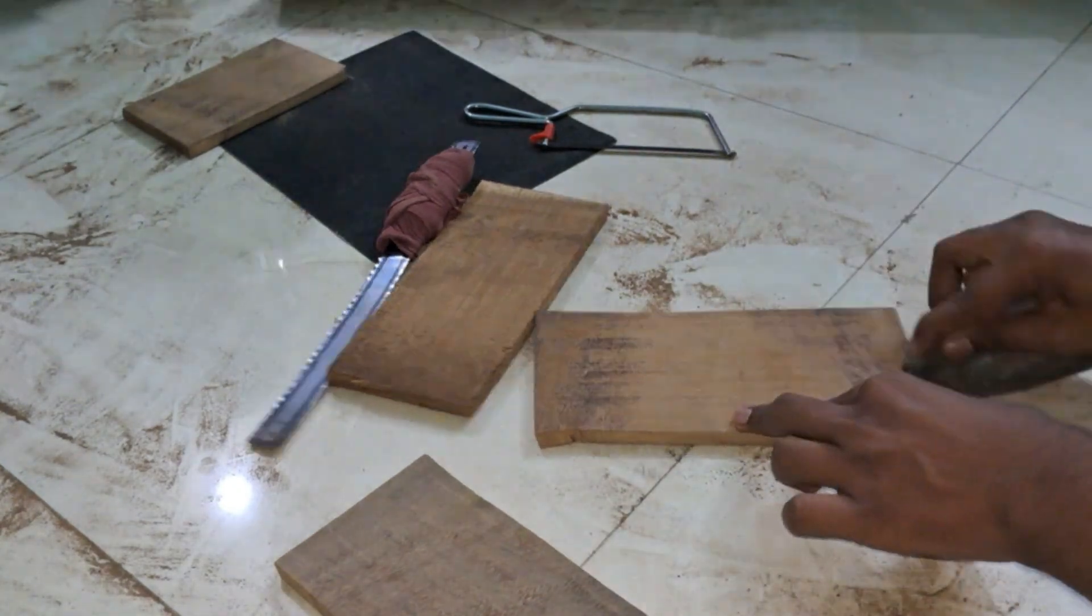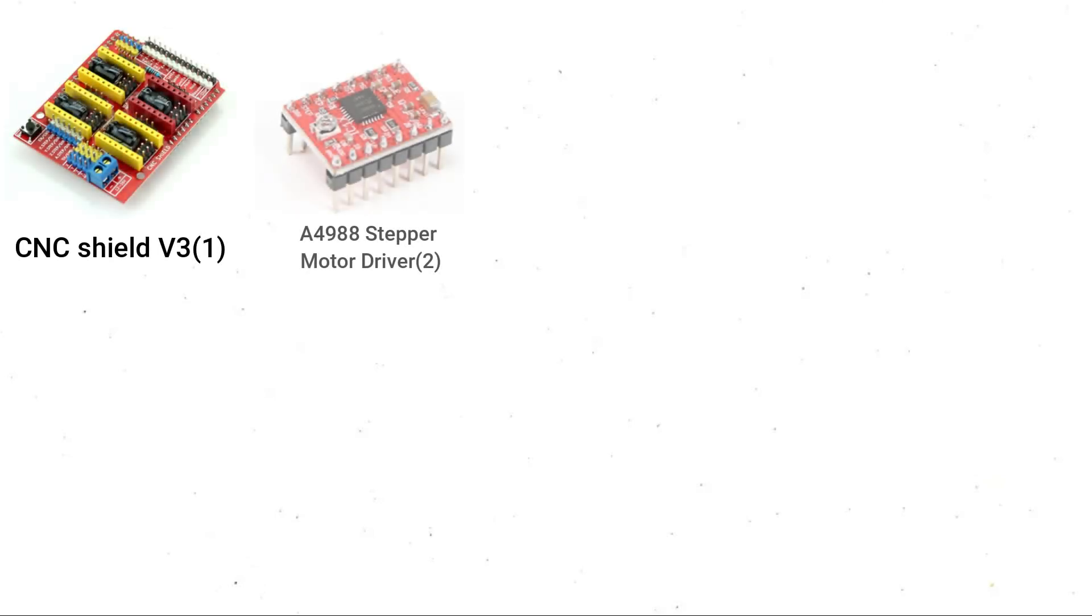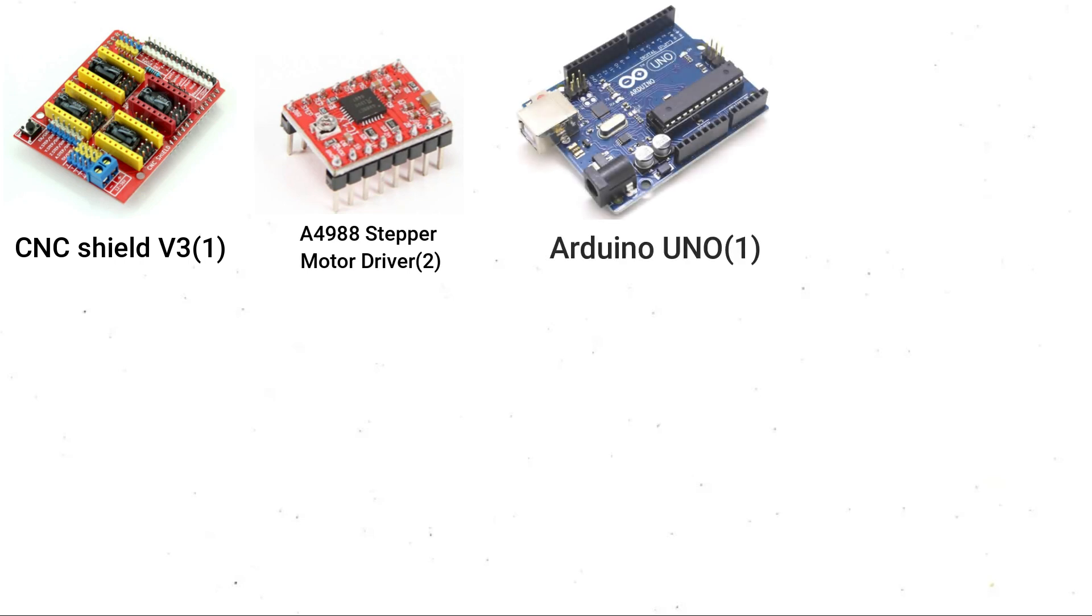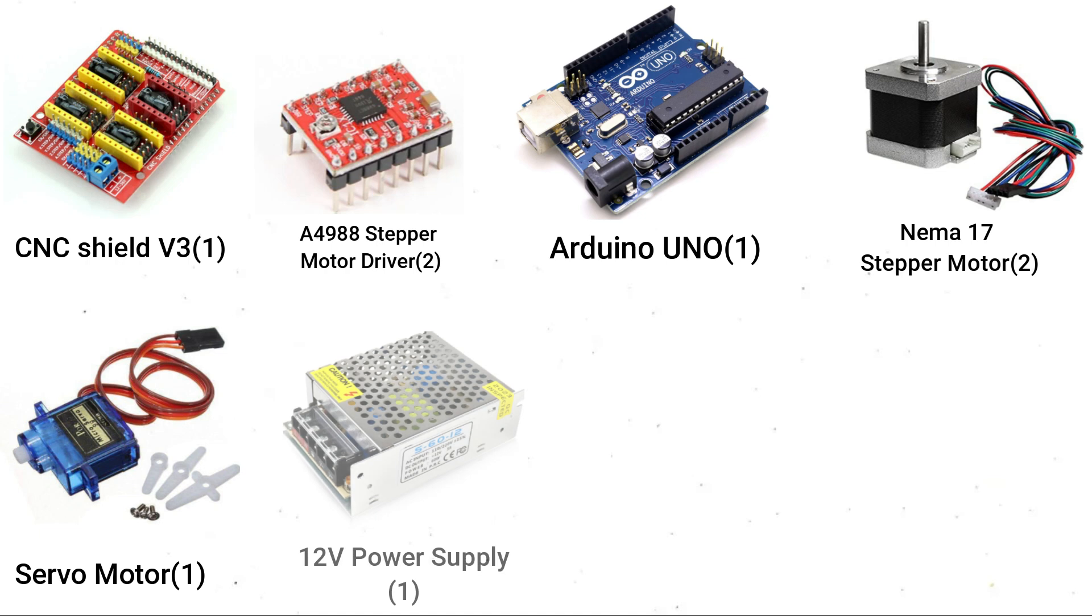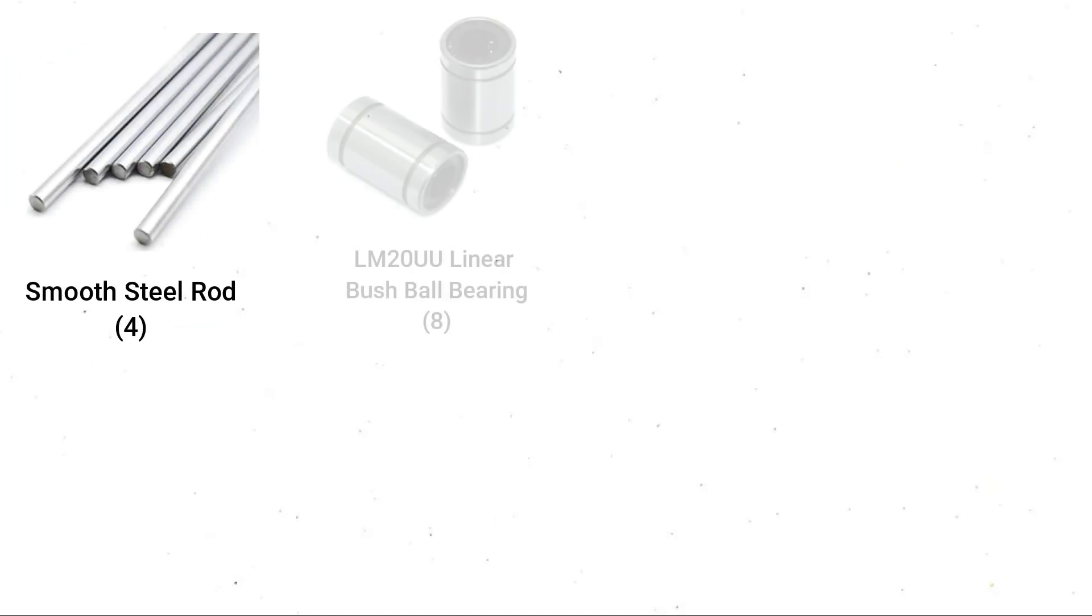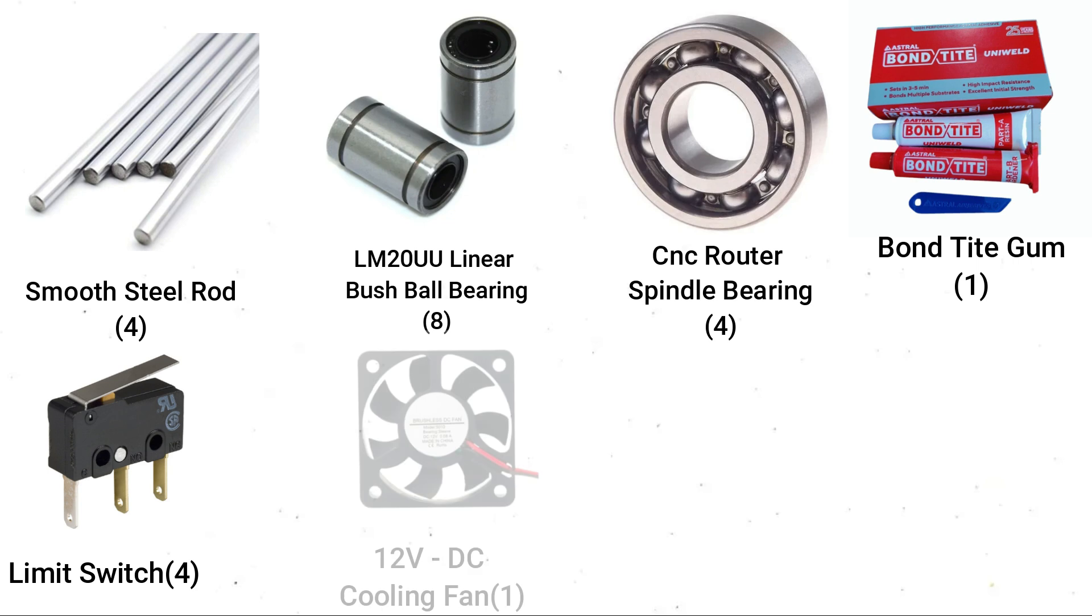To build this we need: CNC Shield V3, A4988 stepper motor drivers, Arduino UNO, NEMA 17 stepper motor, servo motor, 12V power supply, motor belt, motor pulley, smooth steel rod, LM20UU linear ball bearing, CNC router spindle bearing, bondi limit switch, and 12V DC cooling fan.